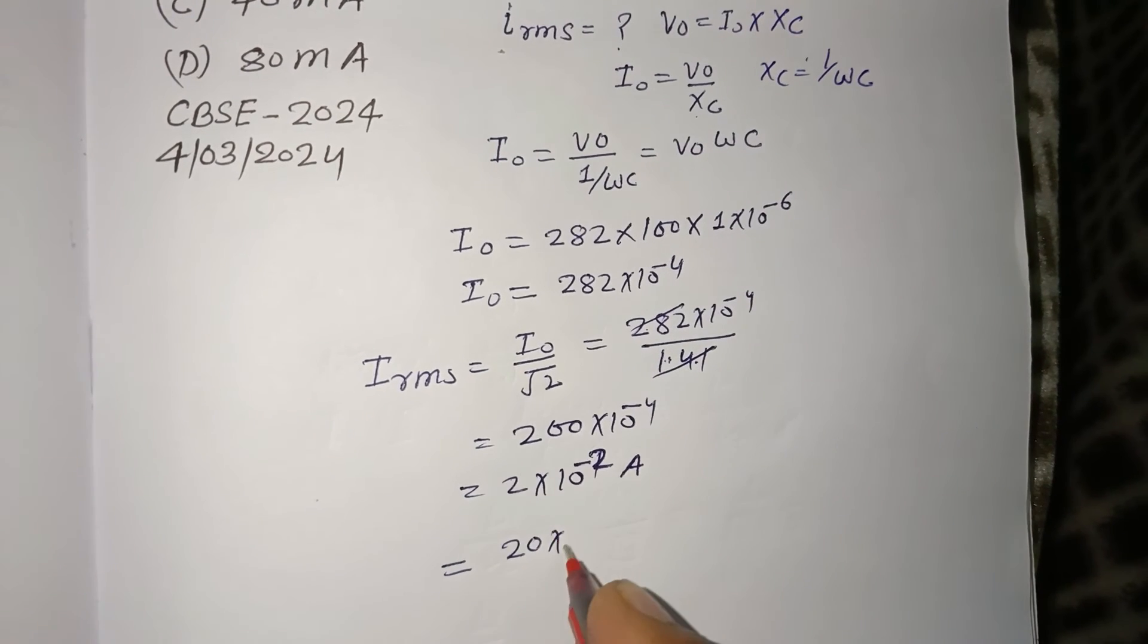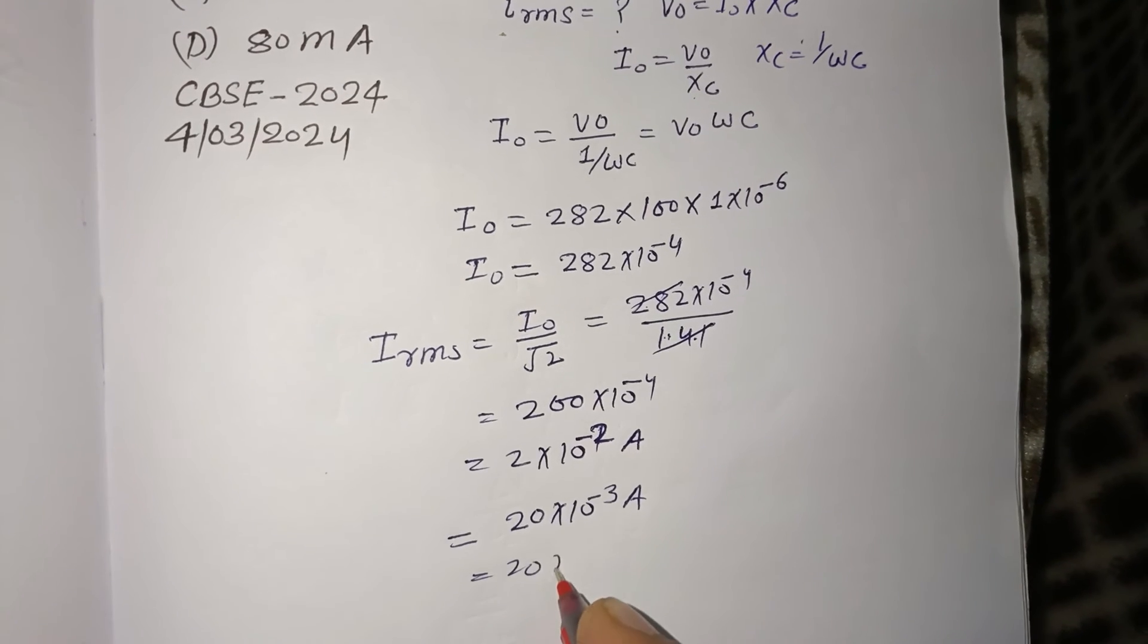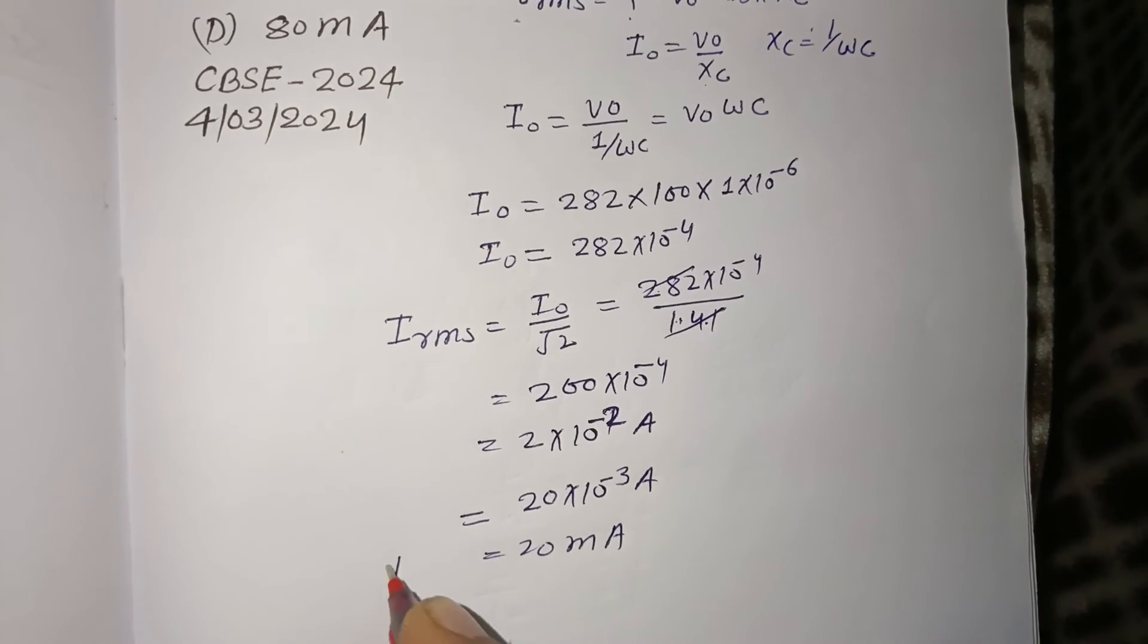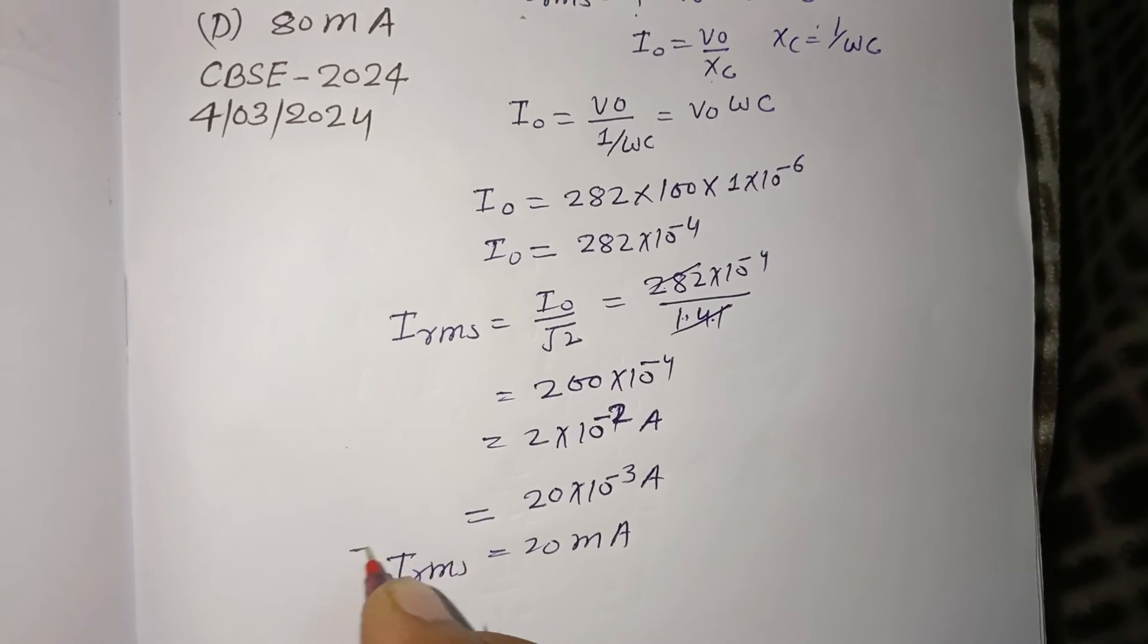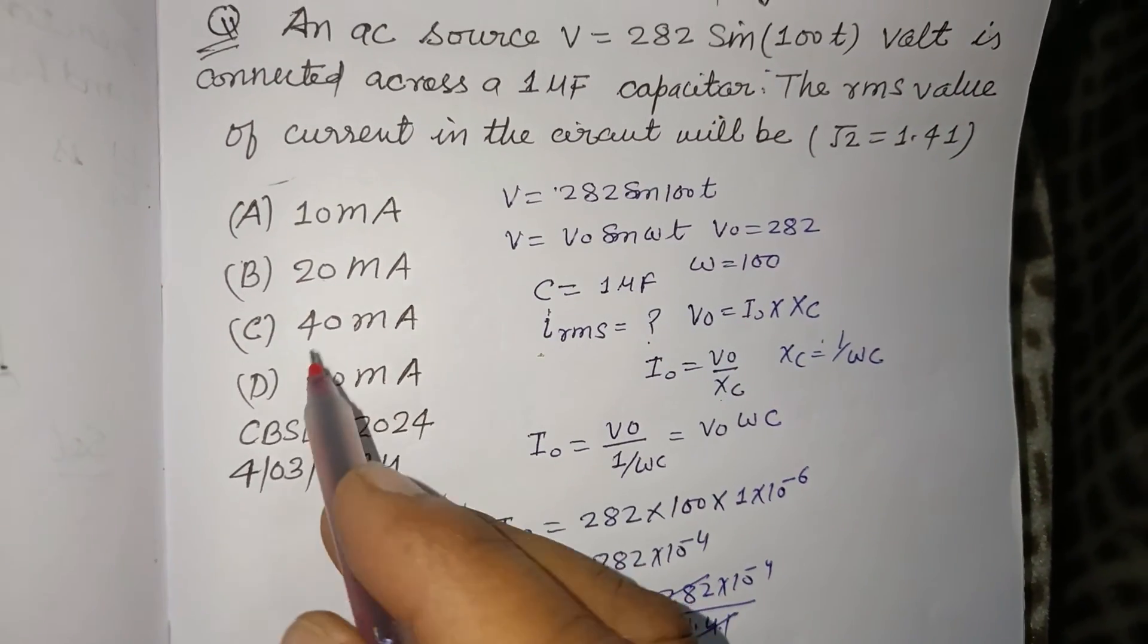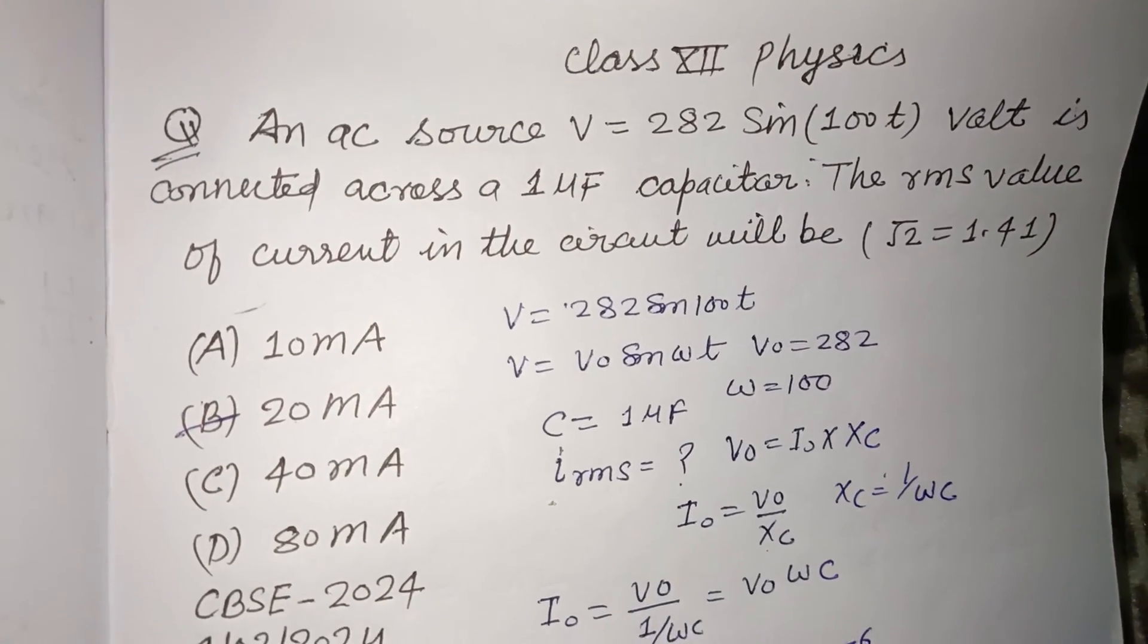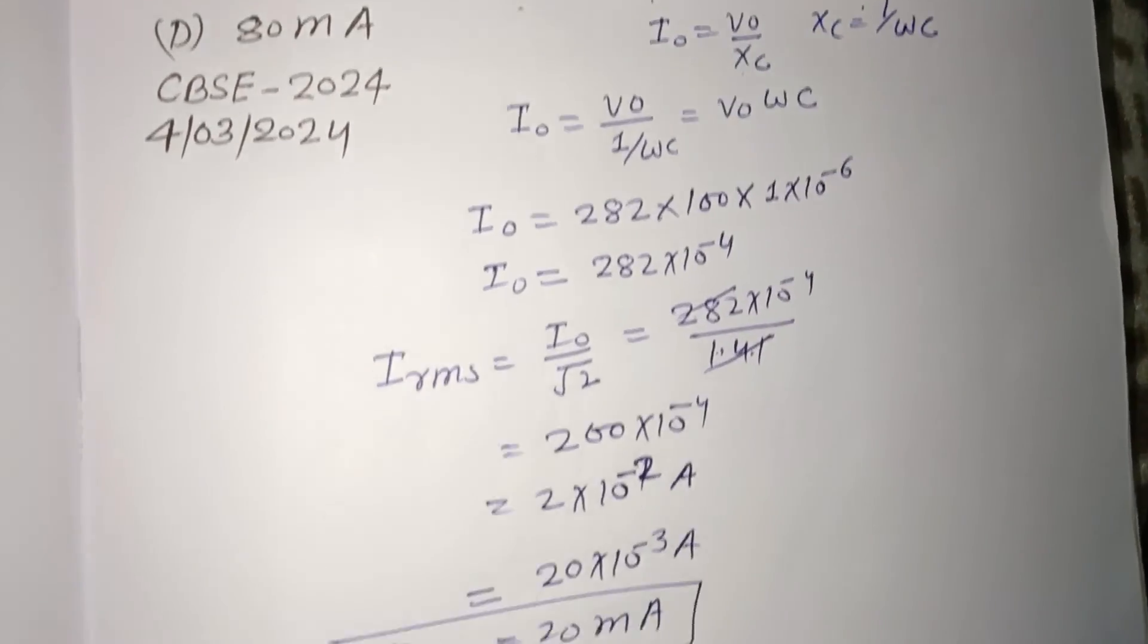We can write this as 20 × 10^-3 amperes, which is 20 milliamperes. So IRMS = 20 mA. This is option B, therefore option B is correct. I hope you got it. Please like the video and subscribe to the channel. Thanks for watching.